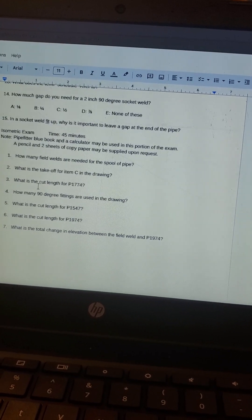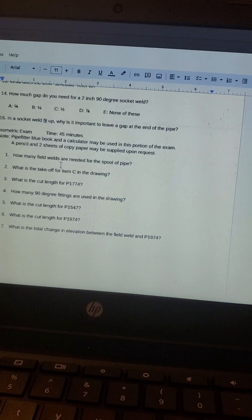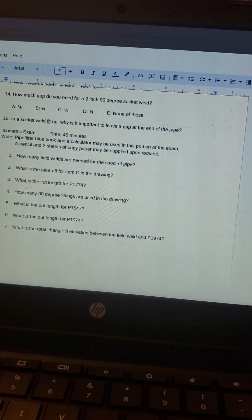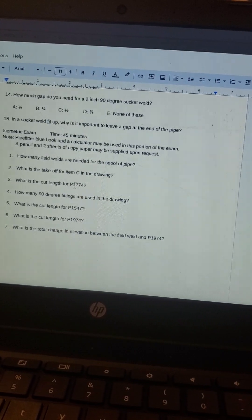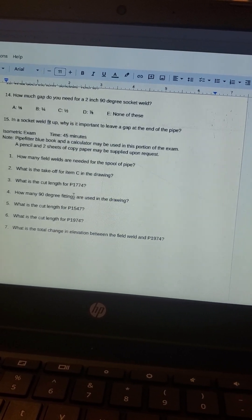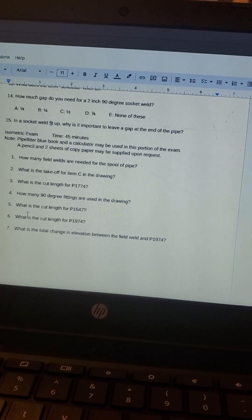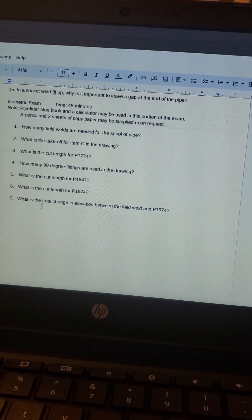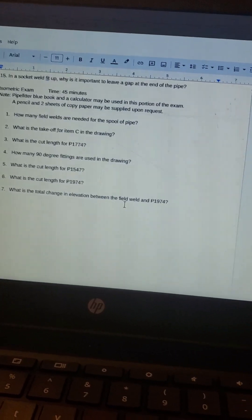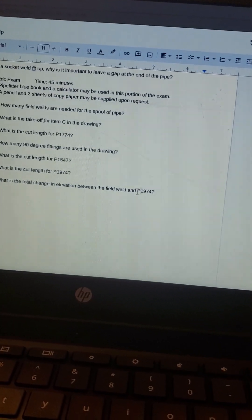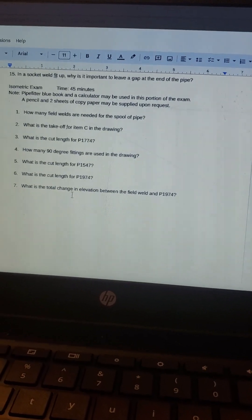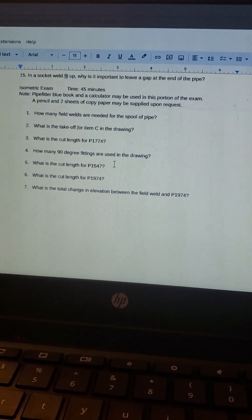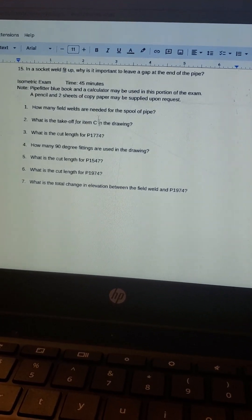So that's pretty much it. How many field welds are needed? So I don't know, like I said I don't have the drawing, but basically you count the field welds. What is the takeoff from item C? You don't know what item C is. What is the cut length of this particular pipe? How many 90s are being used? Then ask for the cut length of this pipe, cut length of that pipe. Then it says what is the total change in elevation between the field weld and this pipe? All very common questions.